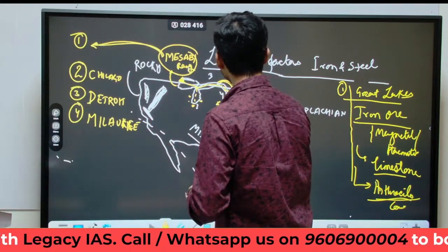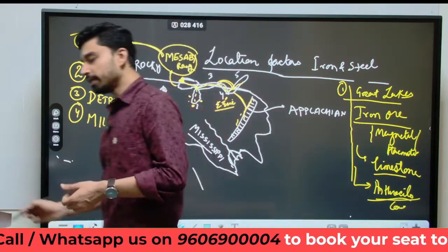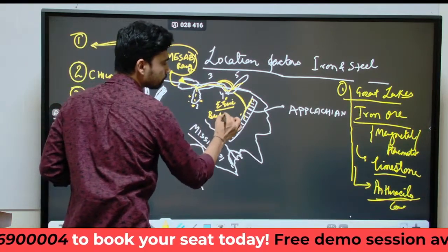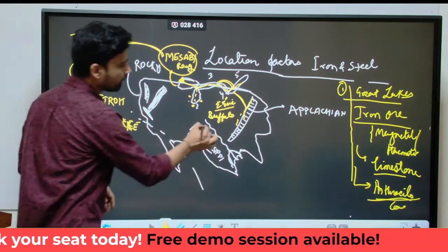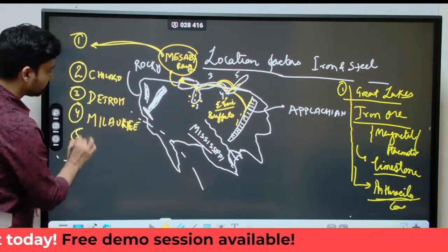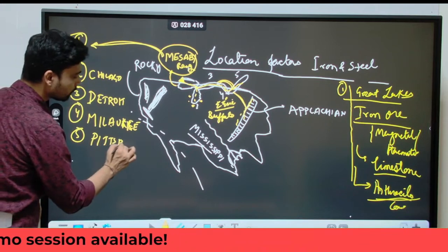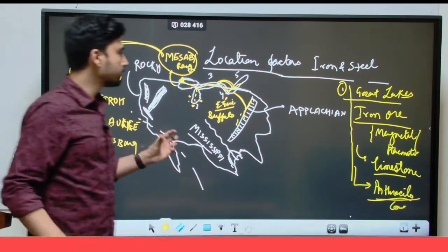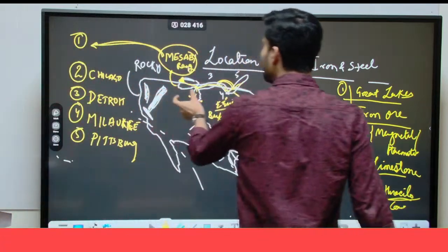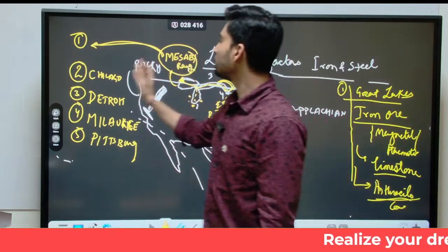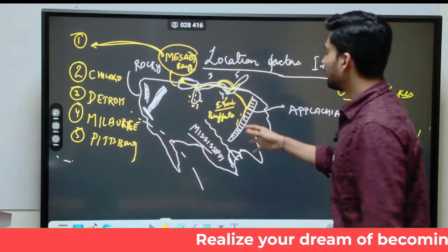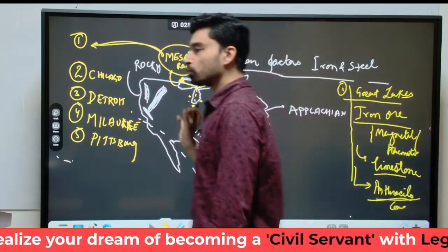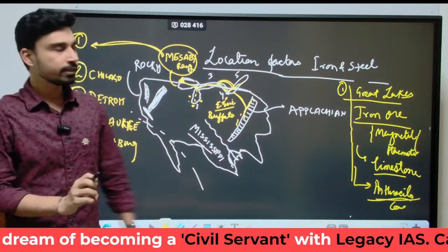To the south of Lake Erie, we have a city also called Erie. Further south, we have Buffalo. And another important city is Pittsburgh. So these are the major iron and steel producers of the USA across the belt from west to east: Mesabi Range, Chicago, Detroit, Milwaukee, Pittsburgh, Erie, and Buffalo.